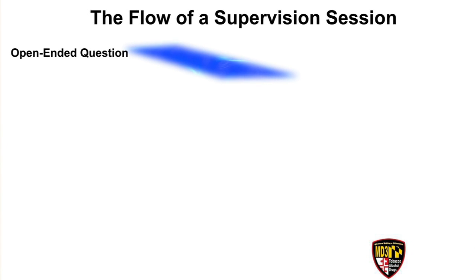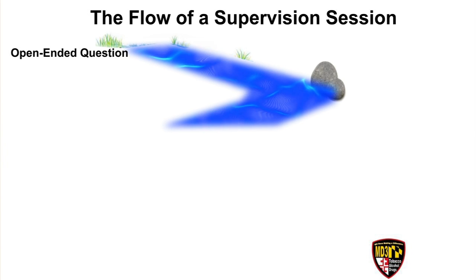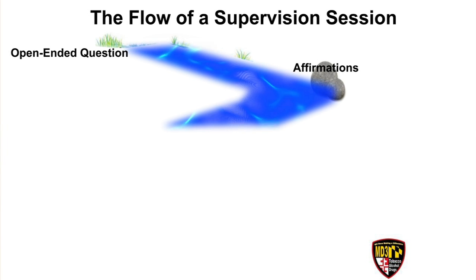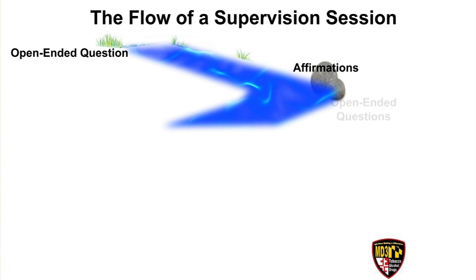Let's think about you as the supervisor and look at the flow of this supervision session. You should start with an open-ended question to get the resident's perspective on how the SBIRT interaction went. For example, in the video, you saw the supervisor ask, how do you think that went? Then you can reinforce positive aspects of the resident's interaction using affirmations, which should be genuine and congruent with what you saw, and specific to what the resident did. In the video, the supervisor used many affirmations, such as, you did a really nice job of doing the screening and connecting it with his blood pressure.